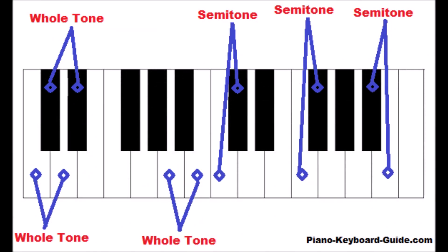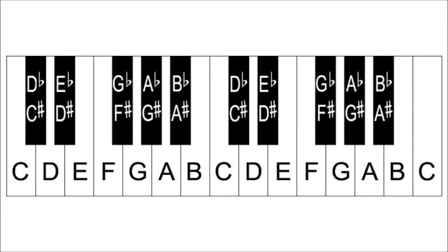What is a semitone? A semitone, also called a half step or half tone, is the shortest distance between two notes. I will use the piano to explain this. On the piano keyboard, a semitone goes from one key to the very next key. For instance, C to the black key after it is a semitone.